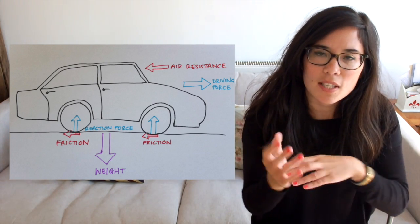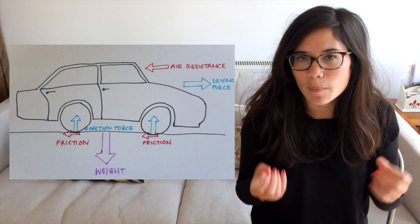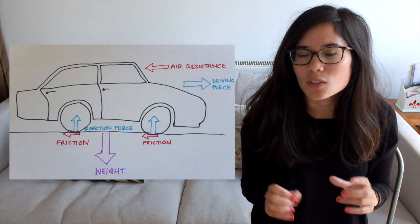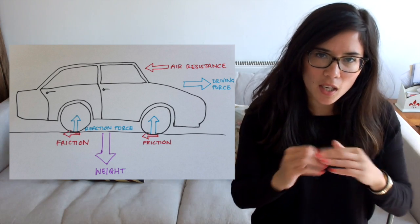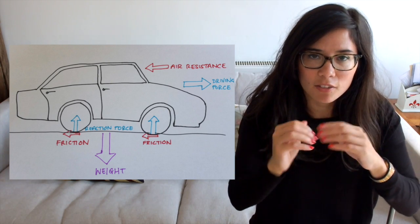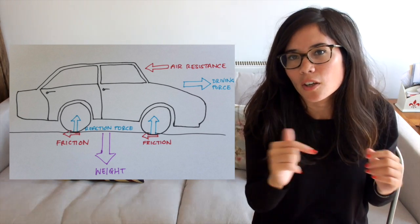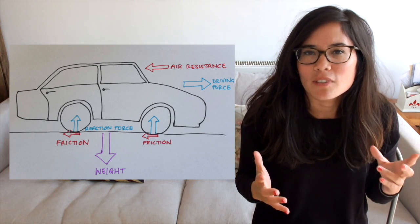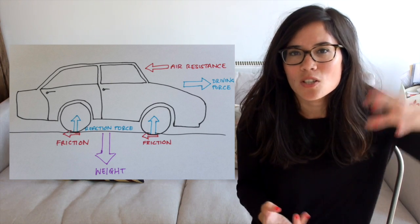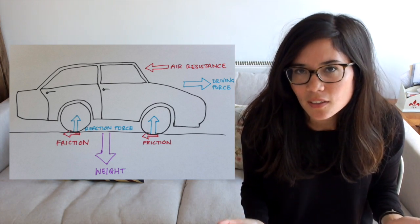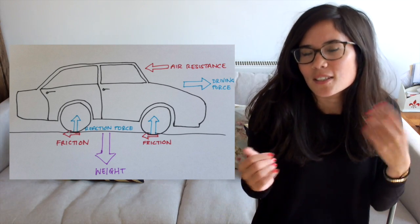You have other forces acting on the car. You have weight — remember, that's the downward force due to gravity. And don't forget this force called the normal reaction. That occurs between the tyres and the road surface and it acts upwards, perpendicular to the road. Basically, all the normal reaction is, is the force which stops objects being forced into the earth, so it acts against gravity. Just remember that it occurs at 90 degrees to the surface.